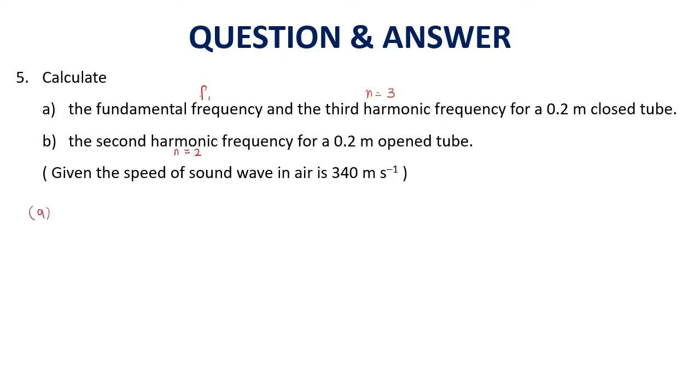We draw the diagram. For closed tube, only one end is closed. Whenever we draw the standing wave, we need to label: N, A, N, A, N. This is the diagram for fundamental frequency. f_1 equals nv over 4L. The equation. Your n should be 1. Then multiply by 340 - V is given in the question - divided by 4. What is L? L is 0.2. Then what do you get? 425 hertz.